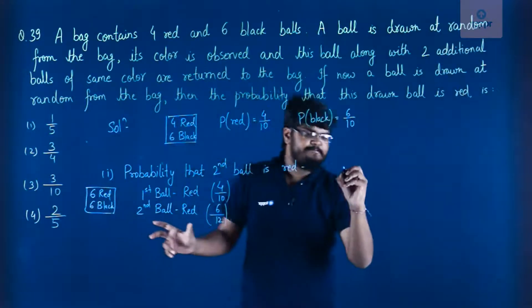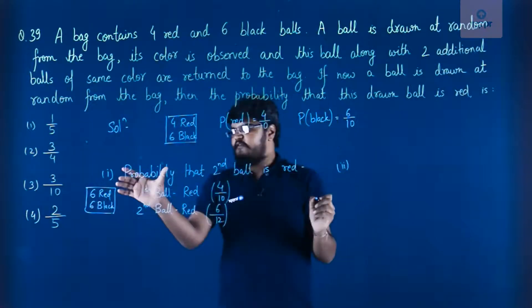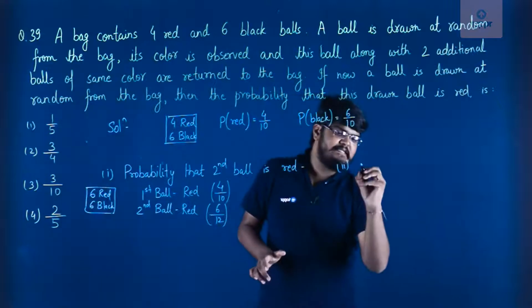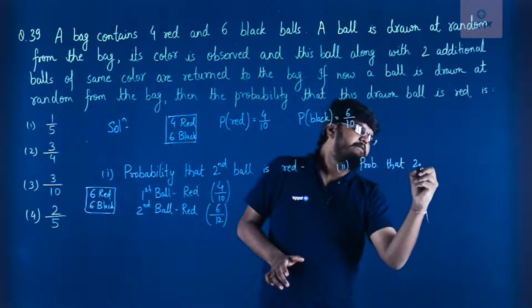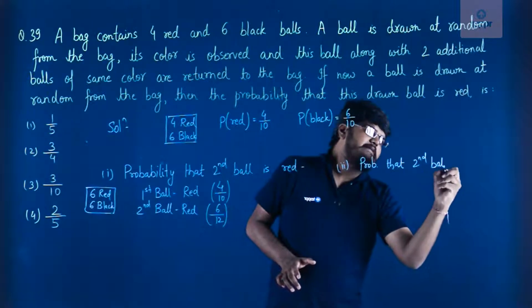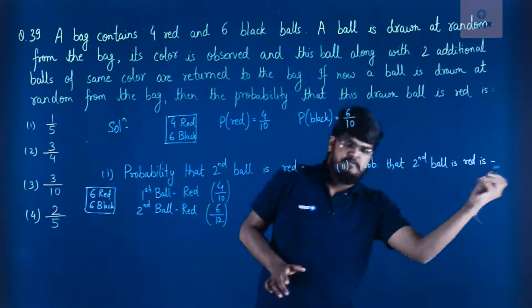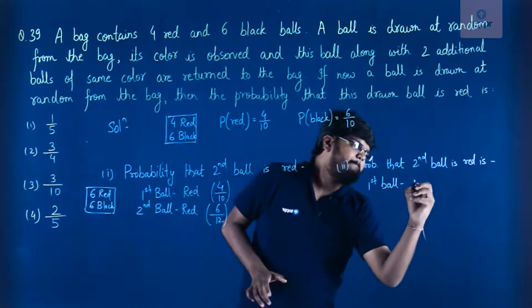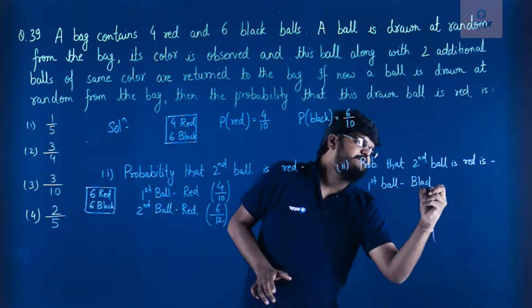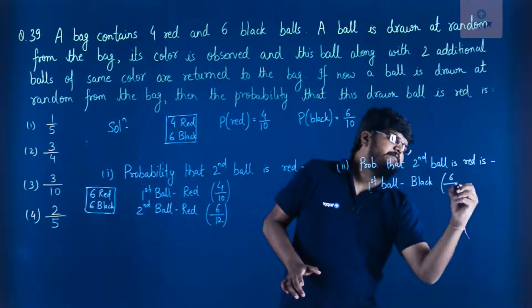Now for the second case, for the same probability that second ball is red. So probability that second ball is red. Now the first ball, let's consider it black. Since it is black, so the probability is what? 6 by 10.